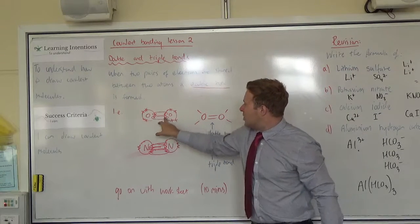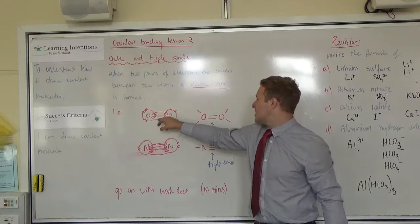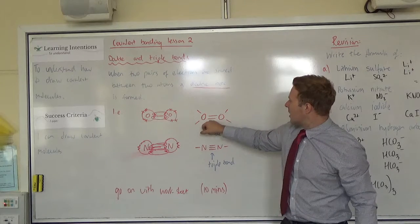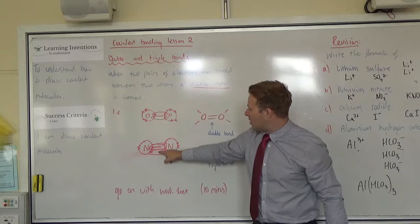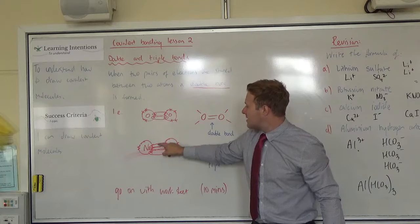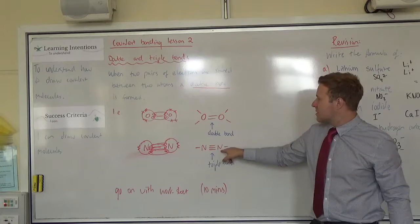Double bonds are when elements share two pairs of electrons, so there's four electrons in total. And so you draw it like that. And triple bonds are where they share three pairs of electrons, or six electrons in total, and it looks like that.